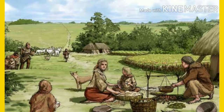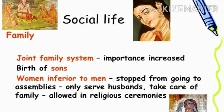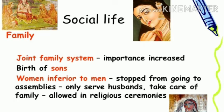Women were placed at the lowest position in the social hierarchy. Women were considered as the embodiment of lies. There is a reference to dowry in Atharva Veda. There was no proper benefit for women's work. There was no practice of child marriage. Polygamy was prevalent among the rich and powerful. The widow could remarry.